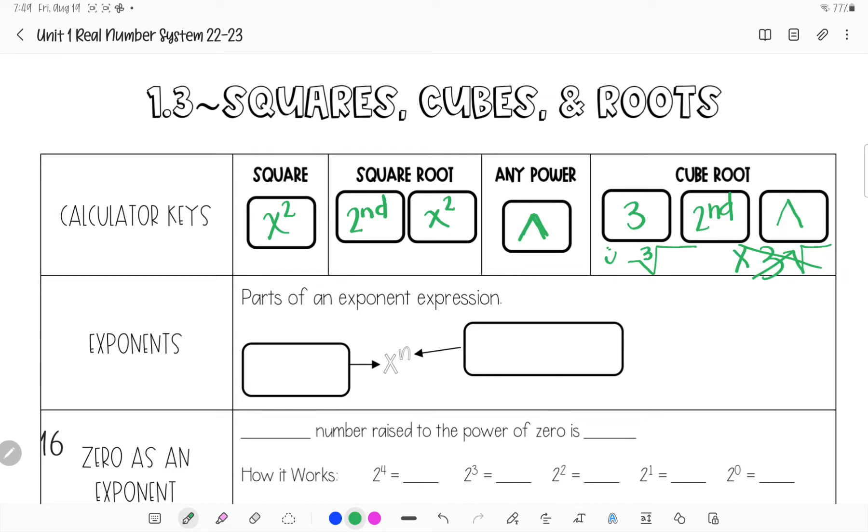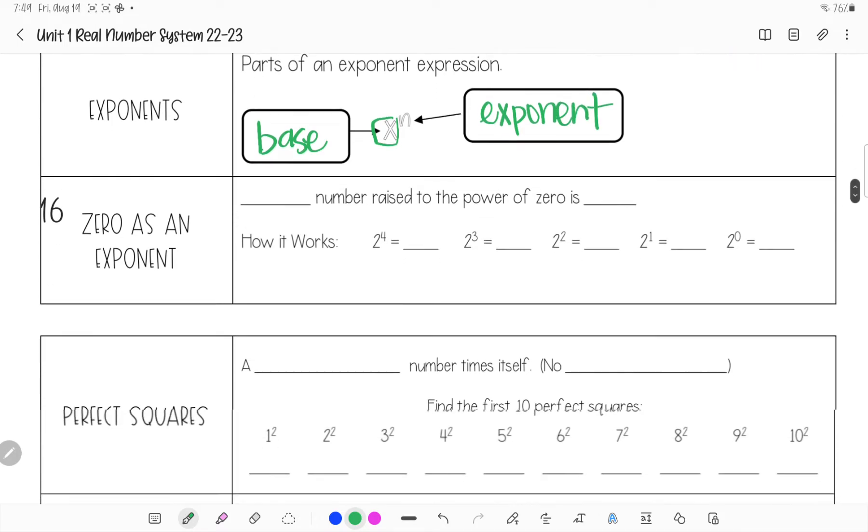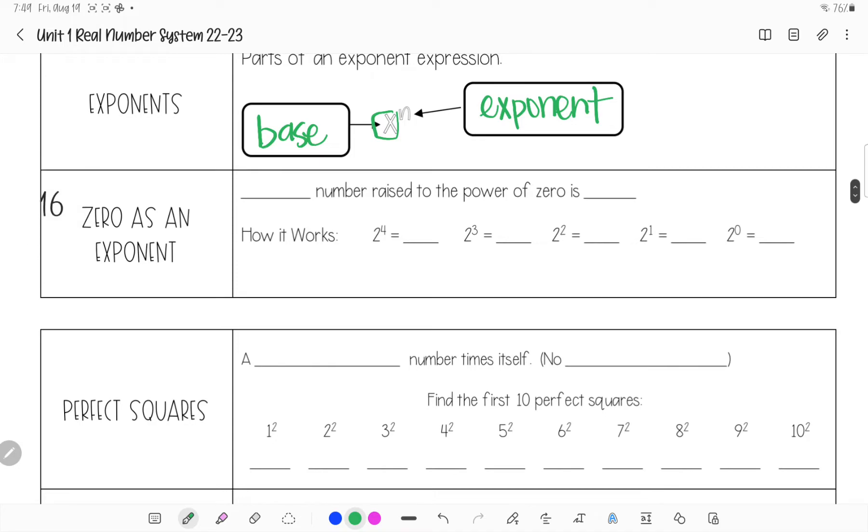All right. Parts of an exponent. Again, this should not be new to you. This big number right here is our base. It's the number we're repeating. This one right here is our exponent or our power. It tells us how many times to repeat the number. Yours does not have a 16 right there because it shouldn't. I don't know how that got there.